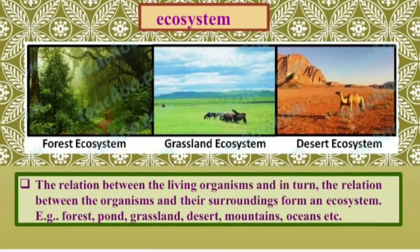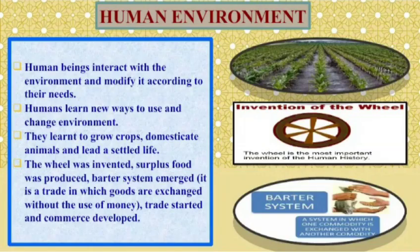Now we will see what is an ecosystem. The relation between the living organisms and, in turn, the relation between the organisms and their surroundings form an ecosystem. For example, forest, pond, grassland, desert, mountains, and ocean are all examples of ecosystems.